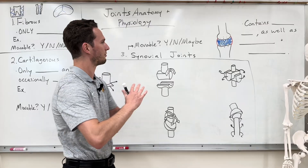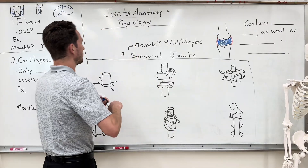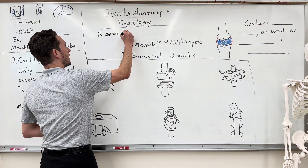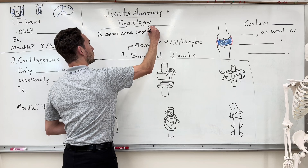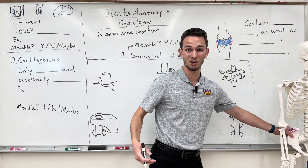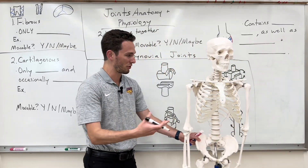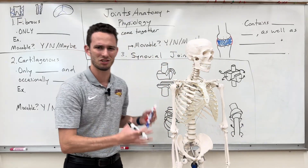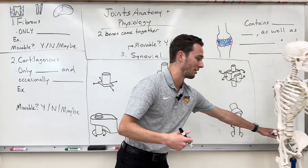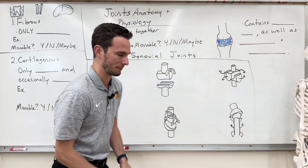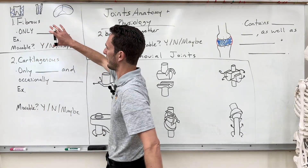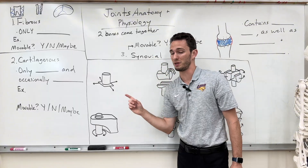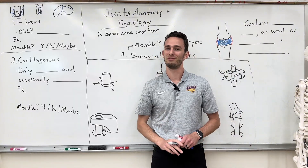Today we're talking about joints, and joints are very, very simple, to be honest. Joints are simply where two bones come together. Now clearly, you have 206 bones in your body — that's a lot of them. So there's a lot of places where these bones are coming together. We need a way to classify these so we can understand how they look as well as how they function — anatomy and physiology. We're going to start first with fibrous joints, move on to cartilaginous very quickly, and then spend most of the time on synovial joints because they're the most common and the most fun.